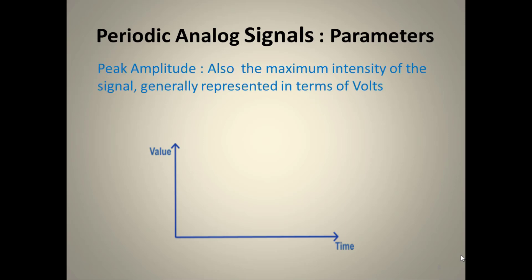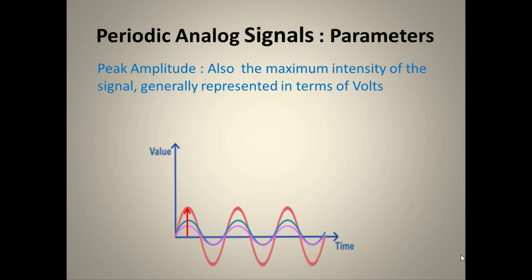Peak amplitude is the maximum intensity of the signal and is generally represented in terms of volts. Looking at three different sine waves, the pink wave's arrow shows the peak amplitude — the maximum height of the signal. Each wave has its own peak amplitude, and the red wave has the largest peak amplitude of the three.